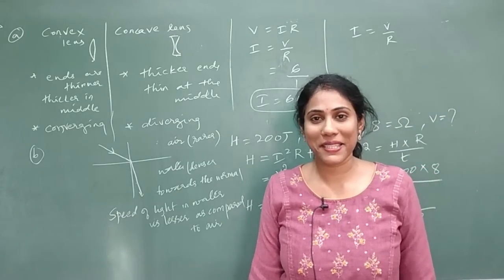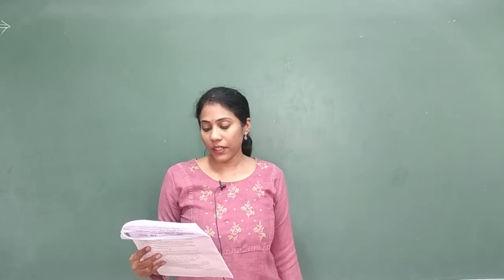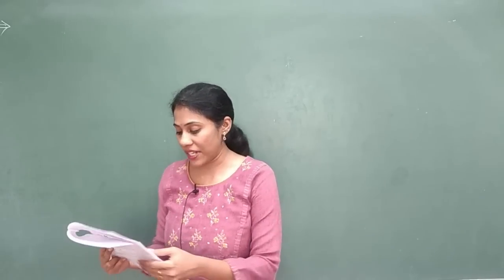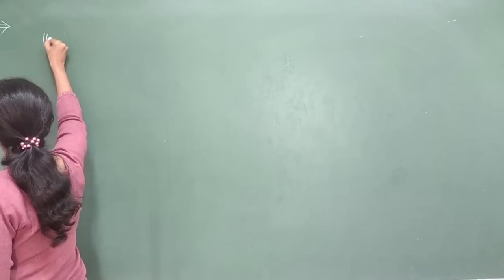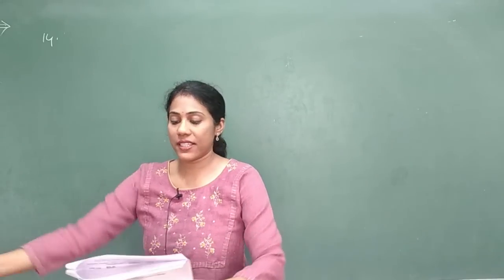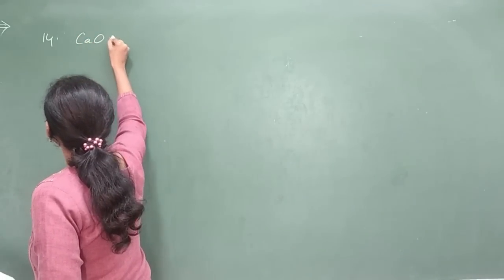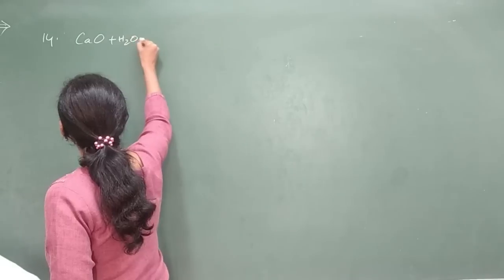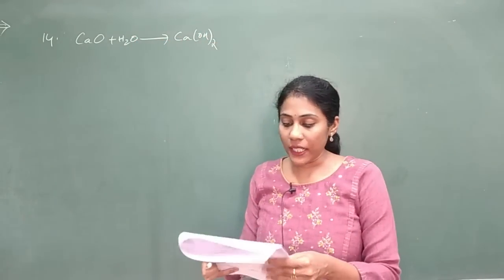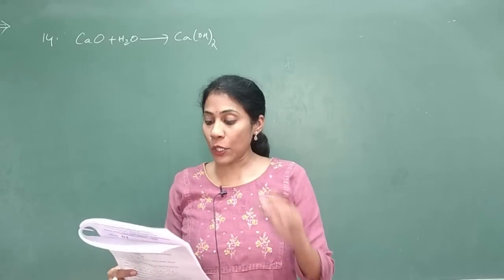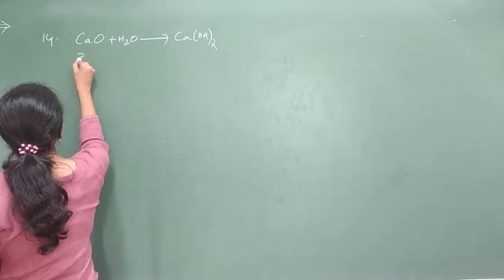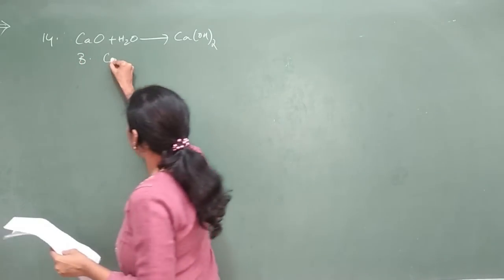Now let us go for Part B — chemistry. Questions 14, 15, and 16 are MCQs. Question 14: calcium oxide reacts vigorously with water to give calcium hydroxide. What type of reaction is this? The answer is option B — combination reaction — because two reactants combine to give one product.